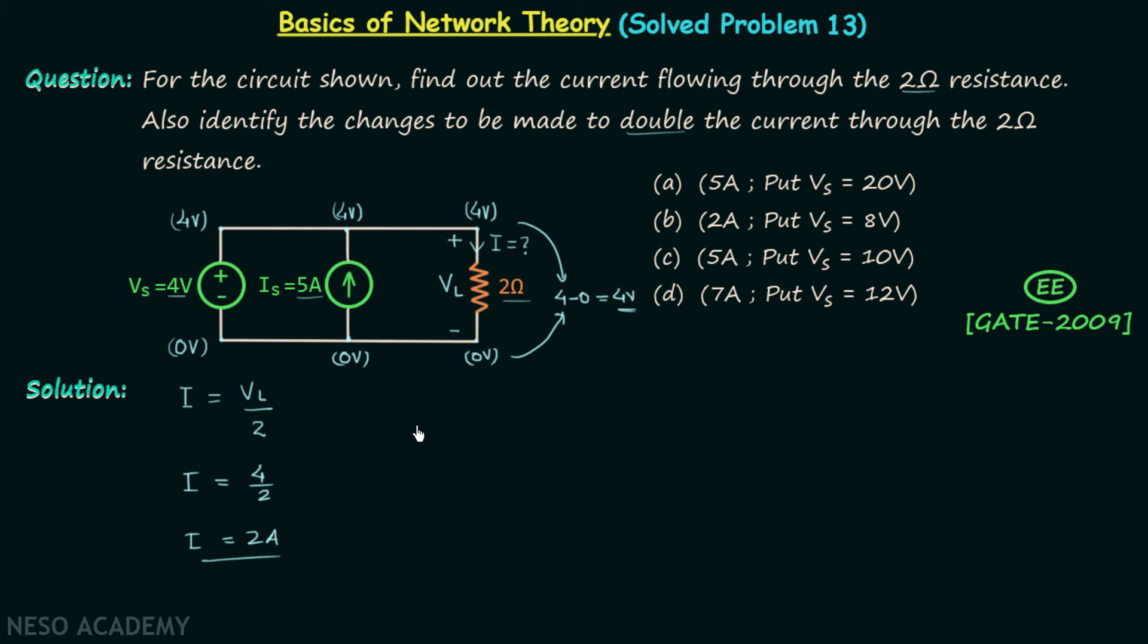So you can remove this current source and you can proceed with the solution. In that case you will have current I equal to two amperes and when you look at the four options you will find option B is the correct option.